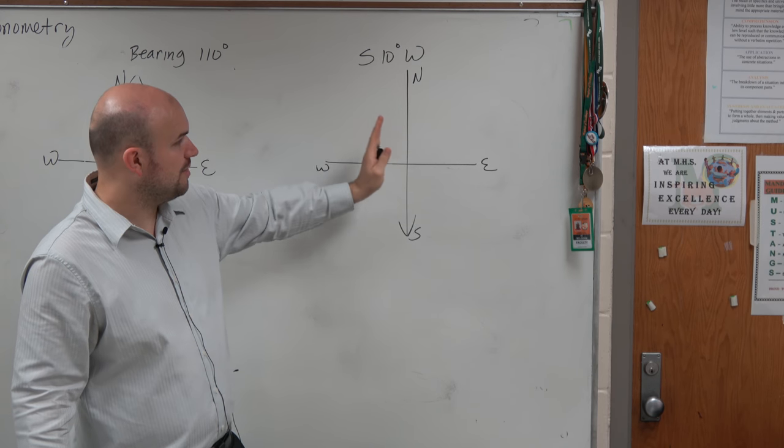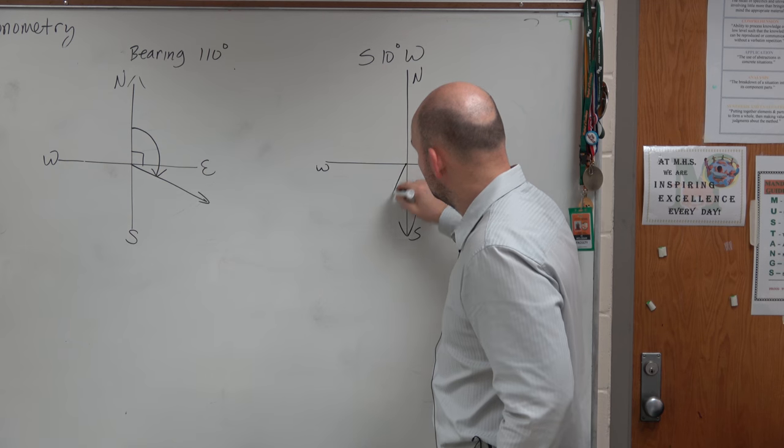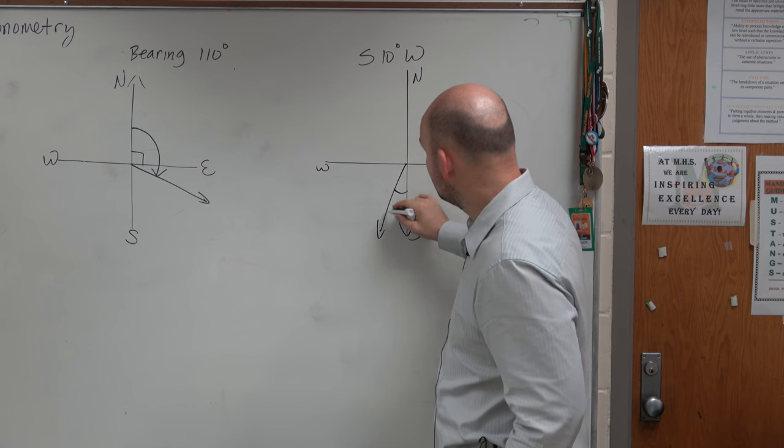And they're saying, just go 10 degrees west. Well, west is to the left. So we're just going to go, say, like that degree is 10 degrees. So south, 10 degrees west.